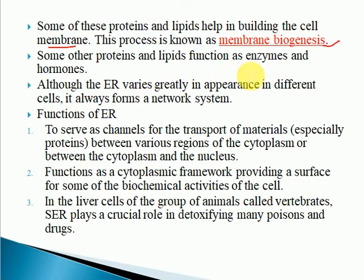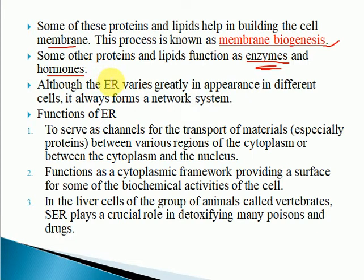Some of the proteins and lipids also function as enzymes and hormones. Enzymes are catalysts which alter the rate of chemical reactions, and hormones are chemicals which control different activities in the body of organisms. So these proteins and lipids which are manufactured also function as enzymes and hormones.